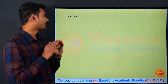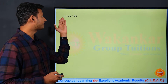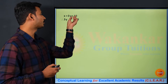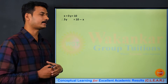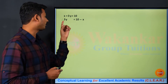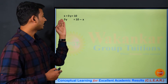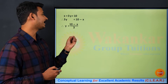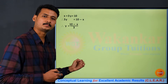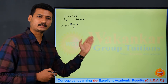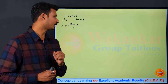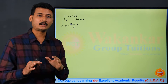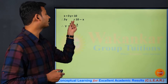Now if we keep 3y on one side and transpose x on the other side, we get 3y equals 10 minus x. And since the coefficient of y is 3, if you transpose 3 on the other side, what you will get is y equals 10 minus x upon 3. So 3 will go in the denominator. So what we got is y equals 10 minus x upon 3. This means we have expressed y in terms of x.